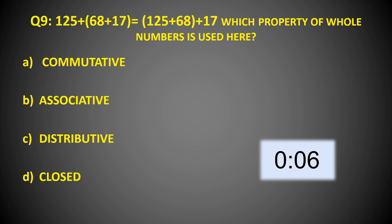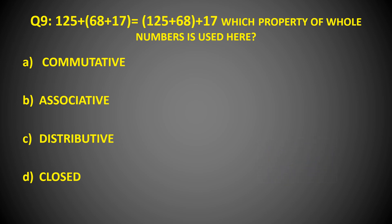20 seconds for this: 145 + 68 + 17 is equal to 125 + 68 + 17. Which property of whole numbers is used here? Time's up. The right answer is Option B, associative property. And if you are confused about what associative property is, don't forget to watch the video on our channel which covers associative property.